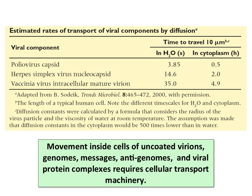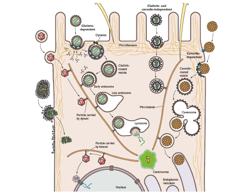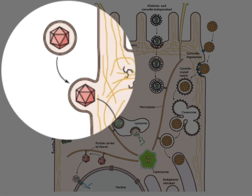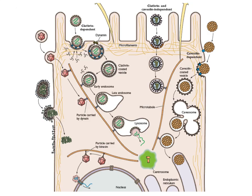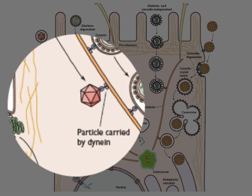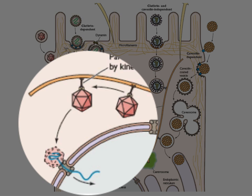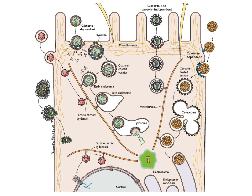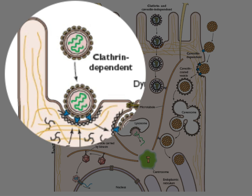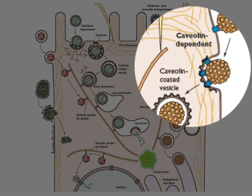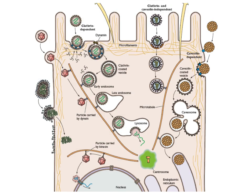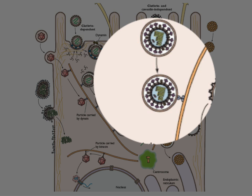Viruses don't diffuse — they are actively transported along cellular pathways. This summary slide shows that viruses entering at the plasma membrane can move down a microtubule carried by a motor, in this case dynein, which brings things toward the centrosome. Eventually the capsid makes it to the nucleus. Some viruses are taken in by endocytosis — clathrin-dependent, clathrin-independent, or caveolin-dependent — and in all cases the endocytic vesicles move along microtubules driven by motor proteins, carrying the virus until it gets out.